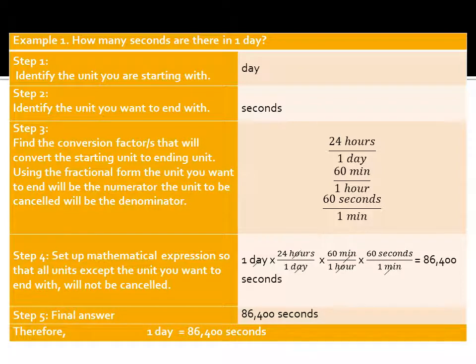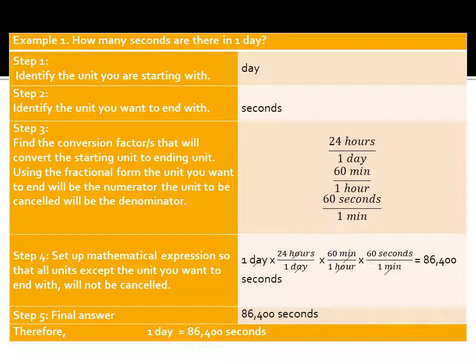Example: how many seconds are there in 1 day? Step 1: starting unit is day. Step 2: ending unit is seconds. Using conversion factors — 1 day = 24 hours, 1 hour = 60 minutes, 1 minute = 60 seconds — set up: 1 day × (24 hours / 1 day) × (60 minutes / 1 hour) × (60 seconds / 1 minute). Cancel out day, hours, and minutes. So 1 × 24 × 60 × 60 = 86,400 seconds. Therefore, 1 day is equivalent to 86,400 seconds.